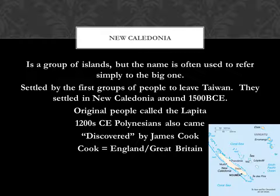In the 1200s CE, the Polynesians will also come to New Caledonia. A European named James Cook is going to be the one who discovers the islands. Sophomore year, your world history teacher is going to talk a lot about the time period when different European powers spread out over the world looking for new lands to claim — that's called the Age of Exploration.